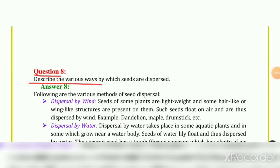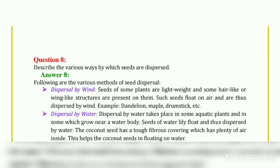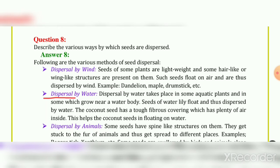Question 8: Describe the various ways by which seeds are dispersed. The following are the various methods of seed dispersal. First, dispersal by wind: seeds of some plants are lightweight and have hair-like or wing-like structures on them. Such seeds float in the air and are thus dispersed by wind. Examples: dandelion, maple, drumstick, etc.